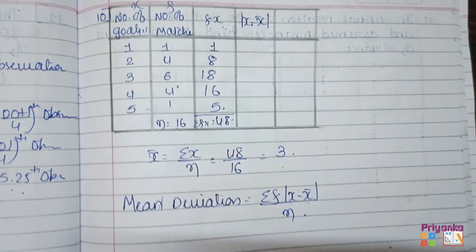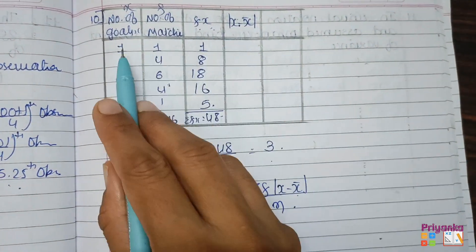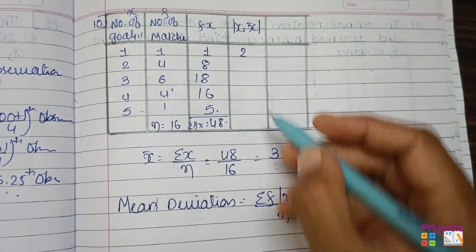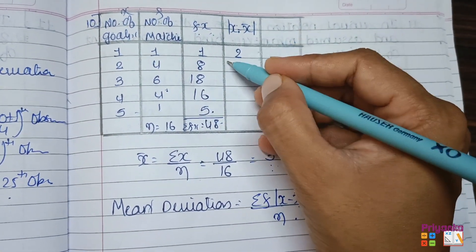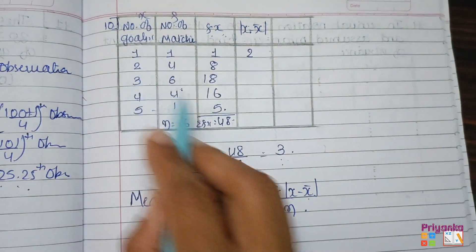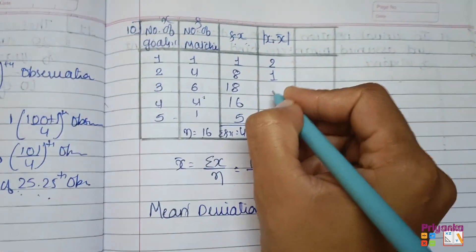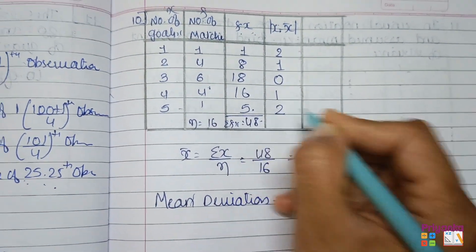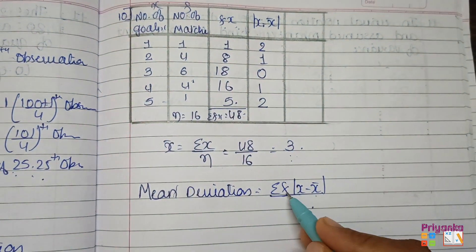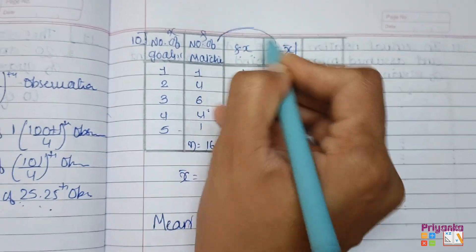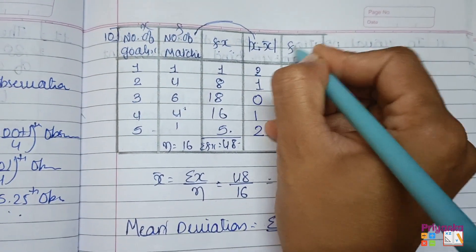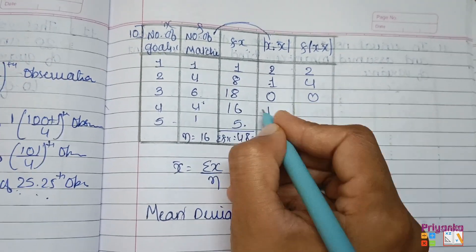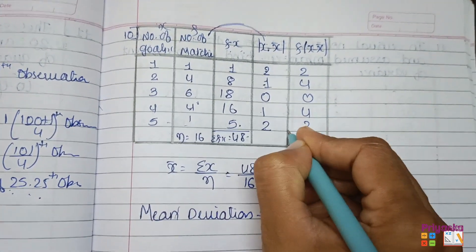For each x value: |1 minus 3| equals 2 — since 1 is smaller, the answer is minus but with the absolute bracket we take positive 2. |2 minus 3| equals 1. |3 minus 3| equals 0. |4 minus 3| equals 1. |5 minus 3| equals 2. Now multiply each by its frequency: 2 times 1 equals 2, 1 times 4 equals 4, 0 times 6 equals 0, 1 times 4 equals 4, 2 times 1 equals 2.